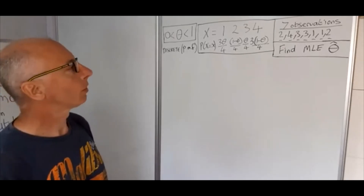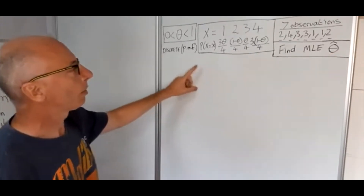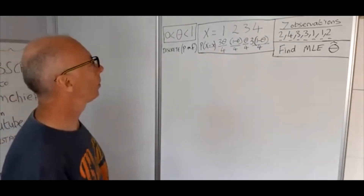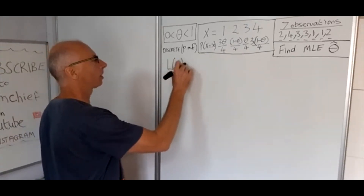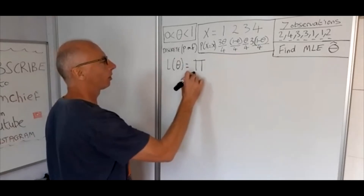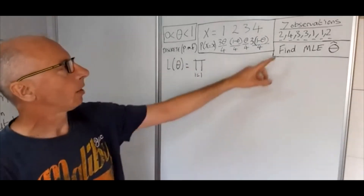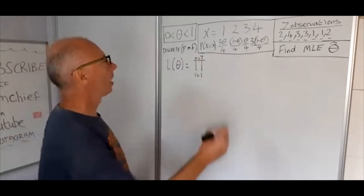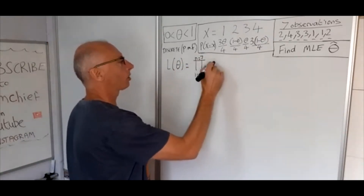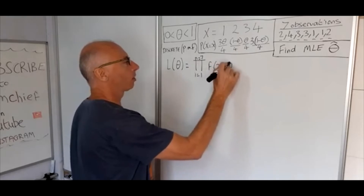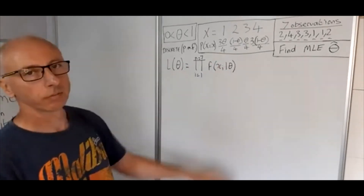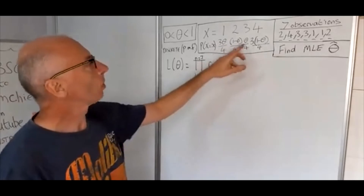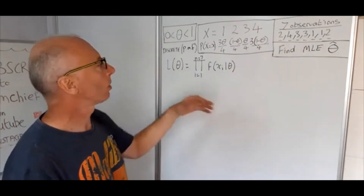To find the maximum likelihood estimate of theta, we first need to find the likelihood function L(theta). We write this as the product from i equals 1 to n equals 7 — since we have seven observations — of the probability mass functions of all the x_i's with respect to theta. We need to write all of these in turn for each observation and take the product of them.